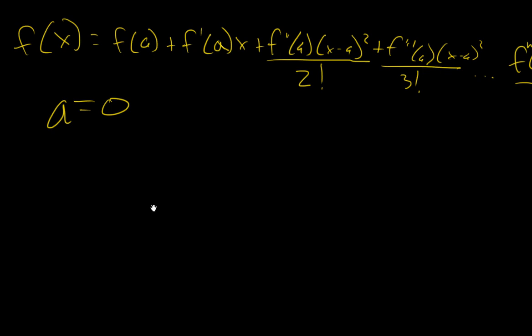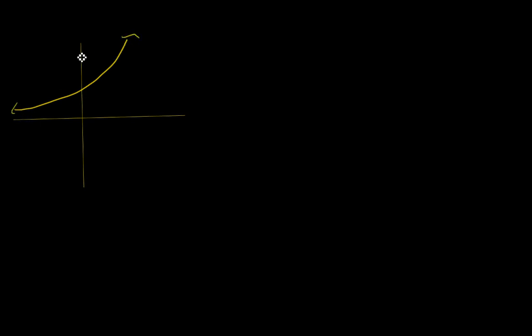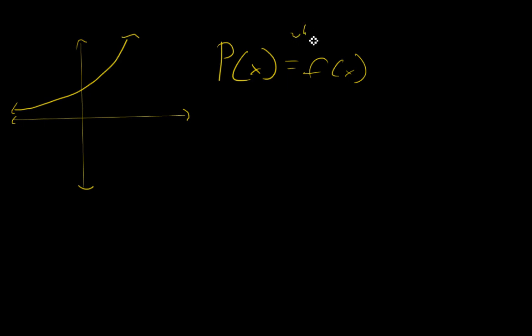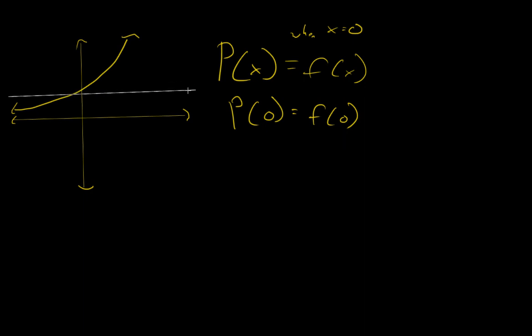So what does this mean? Well, we have a function right here and we want to approximate it. We'll say this is our function, and we want to approximate it at zero. Our approximation is p of x, and we're saying p of x is equal to f of x when x equals zero — so p of zero equals f of zero. That approximation is just going to look like a horizontal line, and all that's saying is our approximation is equal to our function at zero.